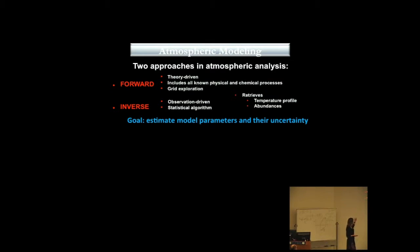Another approach is called inverse, or retrieval approach, that determines the properties of the planetary atmosphere based on the available observation. This approach uses statistical algorithms, usually Markov chain Monte Carlo routines, to explore the phase space of the parameters until it finds the best match with the data.